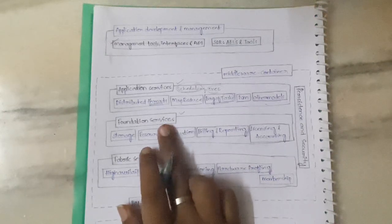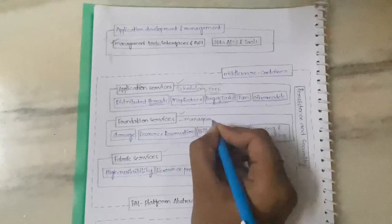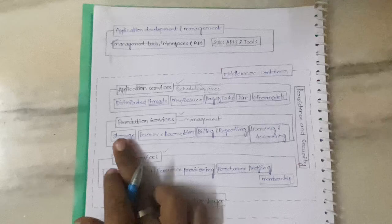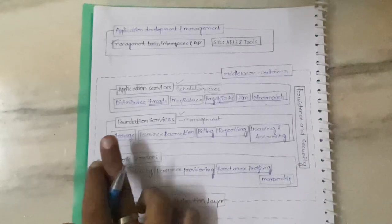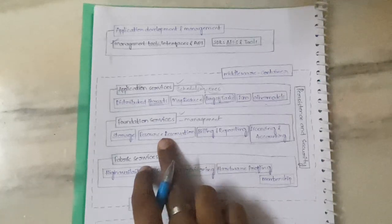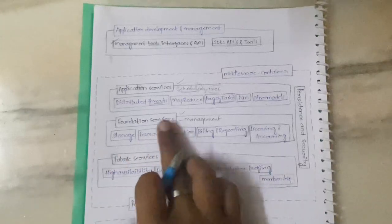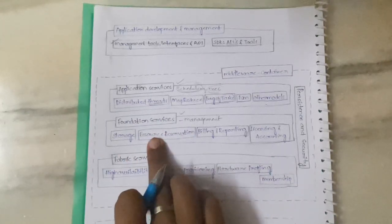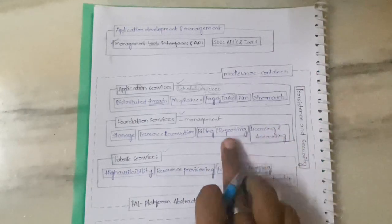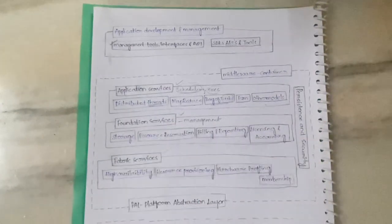Foundation Services are responsible for management. In your Foundation Services you'll have storage — information about what storage is available and what is used. You'll also have Resource Reservation — what resources are already reserved and what are available. Additionally, you have Billing and Reporting, and Licensing and Accounting. All these things are management-related and come under Foundation Services.